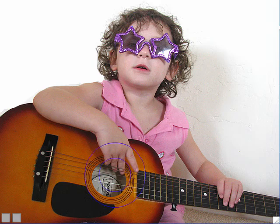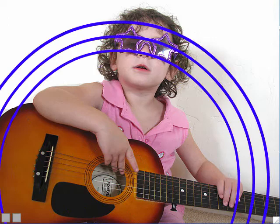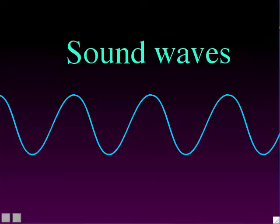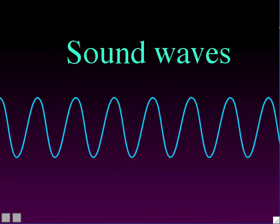Some sounds are low pitch and others are very high pitch. What causes the pitch of a sound is the number of vibrations per second, called the frequency of the sound. If it's a low frequency sound — a small number of vibrations per second — it's a low sound. If it's a higher number of vibrations per second, a higher frequency, that's a high sound. So the frequency of the sound determines the pitch — whether it's high pitch or low pitch.